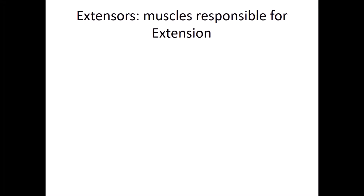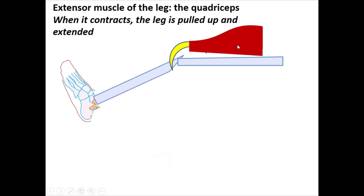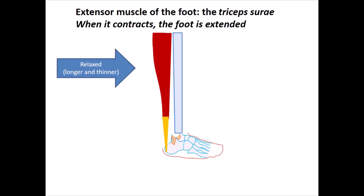Repeating the same idea to make it clear: extensors are the muscles responsible for extension of your leg, foot, or whatever. For the leg, the extensor muscle is the quadriceps. When it contracts, it pulls your leg upwards. For the foot, the extensor muscle is the triceps sura — a group of two muscles located at the back. When it contracts, the foot is extended.